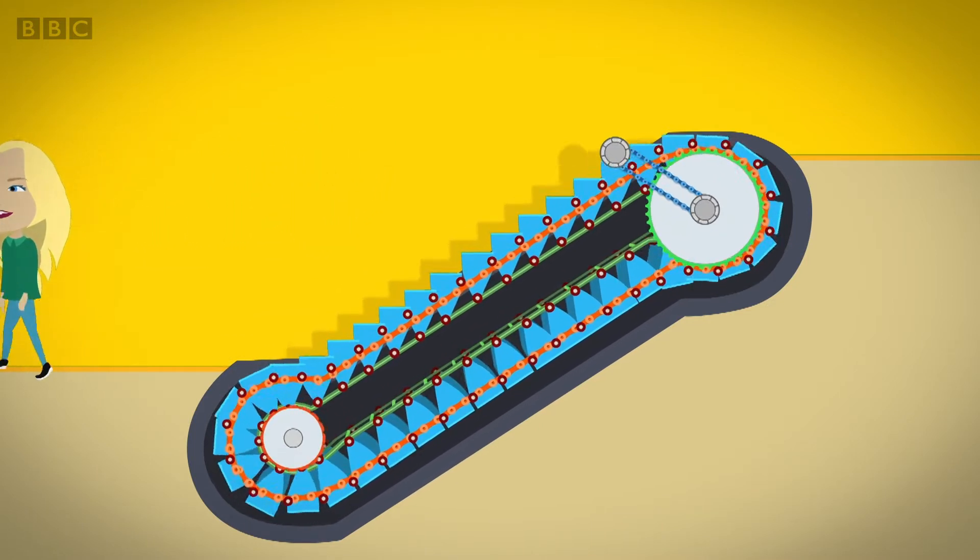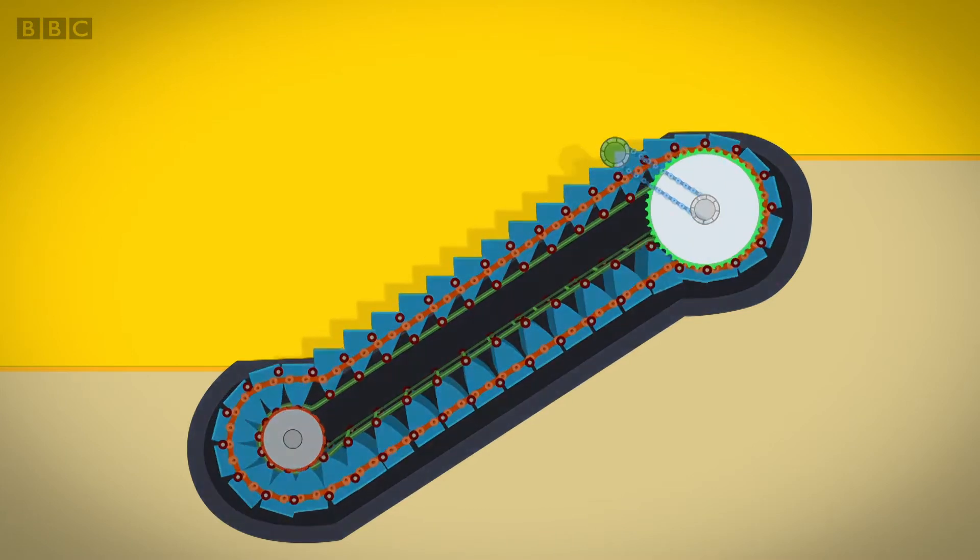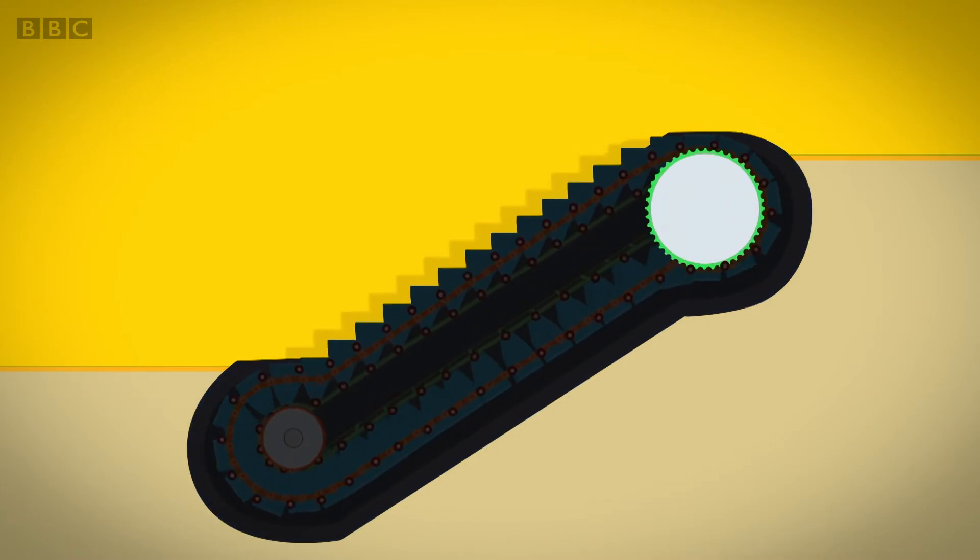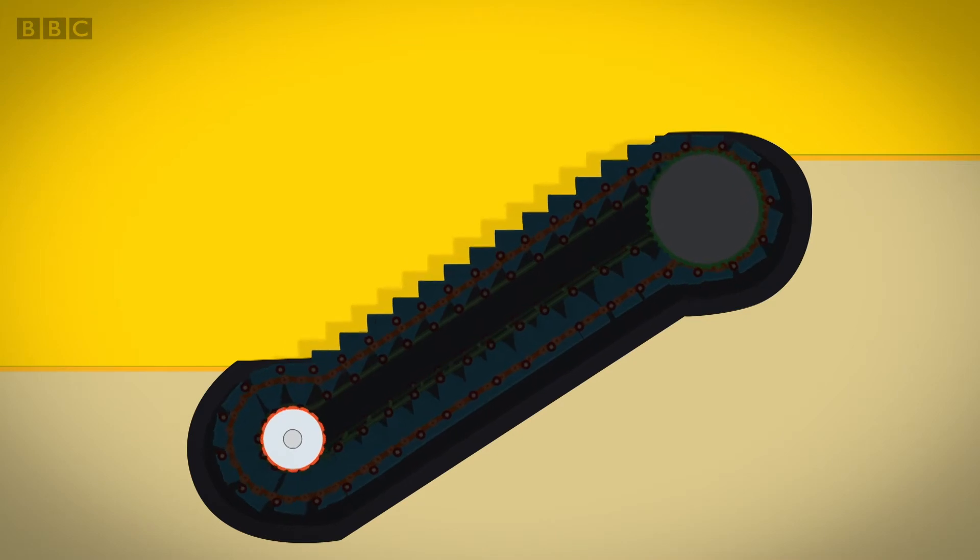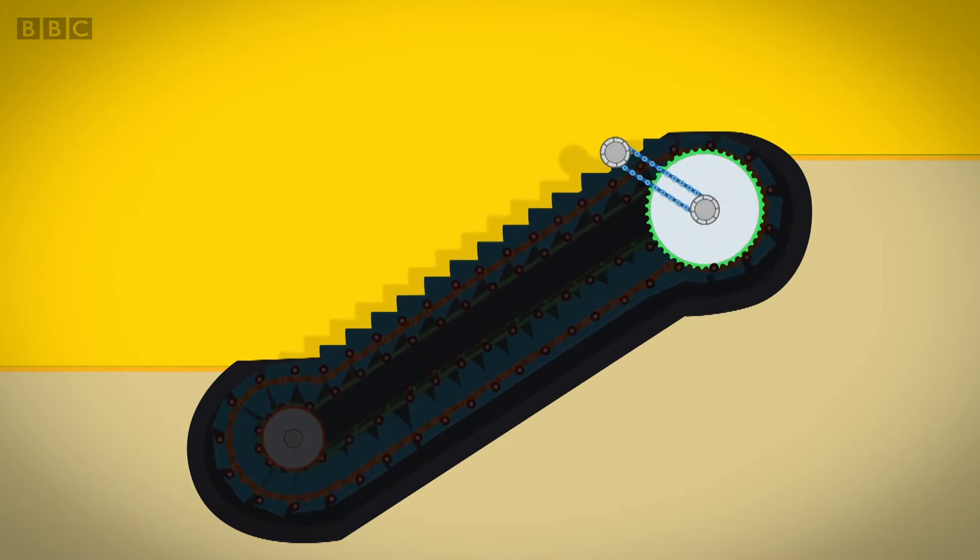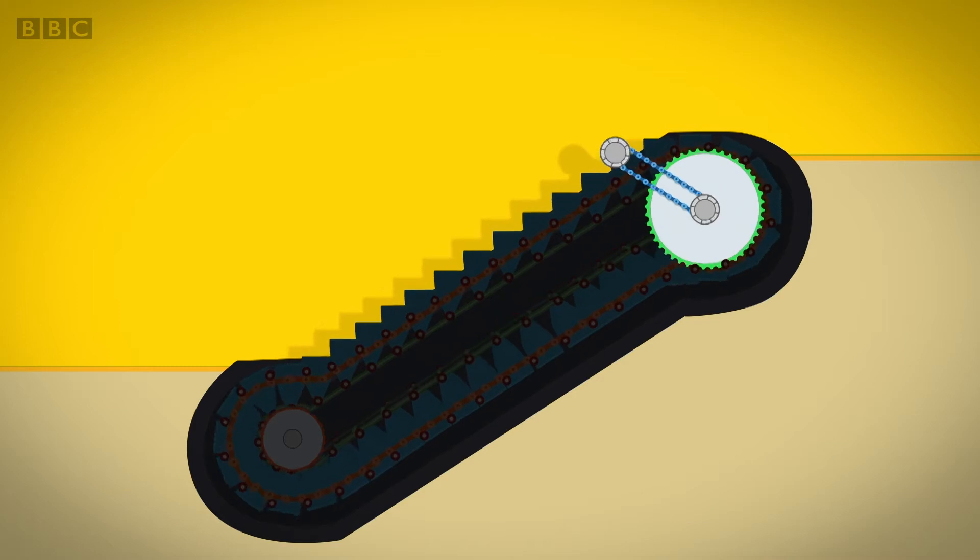The stairs are attached to two sets of wheels called gears, one at the top and one at the bottom. The gears at the top of the escalator are called round bike chains. They look a bit like a bike chain.